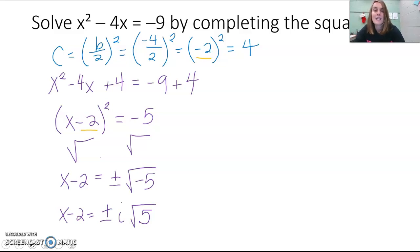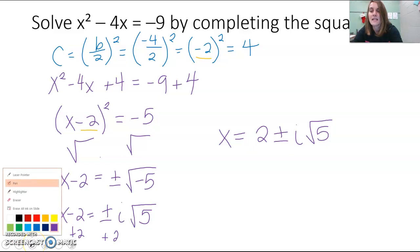And again, we could break that up into two separate equations. But when we add 2 to get our x alone, 2 cannot combine with i square root of 5. They're not like terms. One's imaginary and one is real. So we could just write them together as one answer. And we put our real term first, the two that we added over, plus or minus the i square root of 5. And that is our final answer.